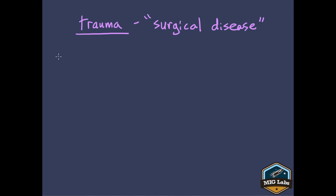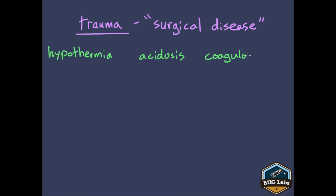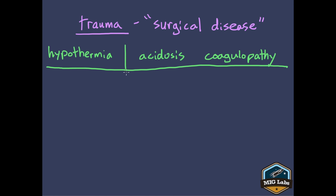That said, there are a lot of things we can do in the field to improve their chances of surviving and improve their outcomes in the OR. Three factors have been identified as being of particular importance in trauma — three factors that correlate to very poor outcomes. Patients who develop these three factors tend to die. The first one is hypothermia, the second one is acidosis, and the third one is coagulopathy.